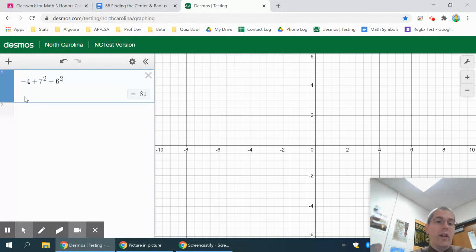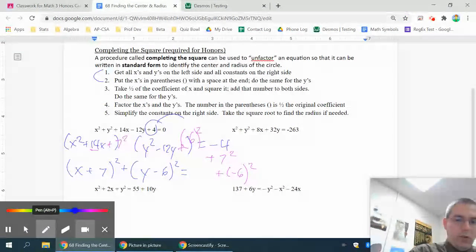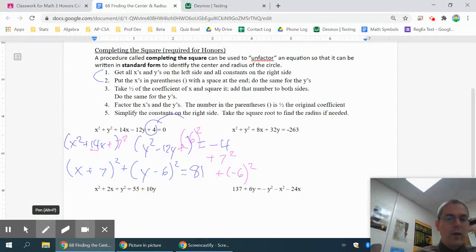So what you're going to have there is a negative 4 plus 7 squared plus 6 squared. That's going to be an 81. So that means that is going to be equal to 81. Now, at this point, I have the equation in standard form. So if I want the center and the radius, I would think my center would be negative 7 positive 6. And the radius would be square root of 81, which is 9.